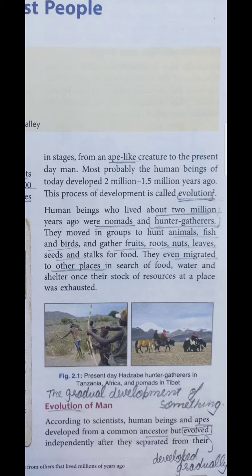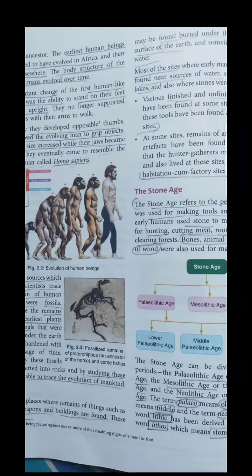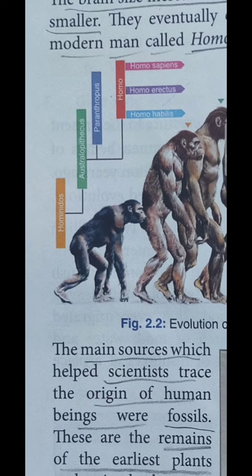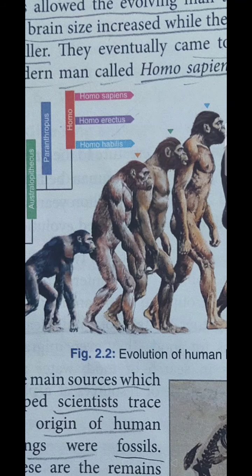Evolution means the gradual development of something. So here we are able to understand how man developed — like we all are human beings, our structure is as you are aware of how we look, but in ancient India the man did not look like that. So the gradual process of man is as we can see in the picture I showed you earlier as well. Our ancestors — ancestors representing the forefathers — the body structure of early humans evolved over time. An important change was the first human-like creature's ability to stand on feet and walk upright.